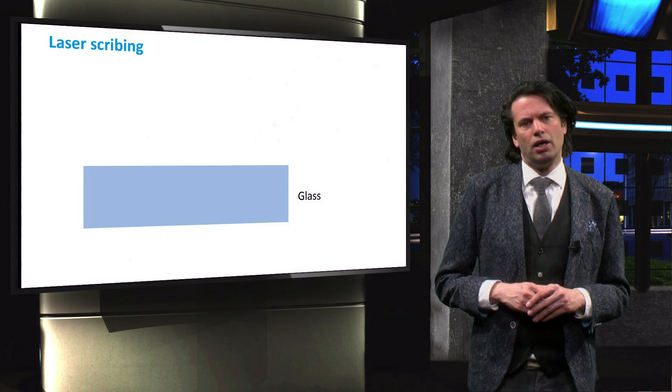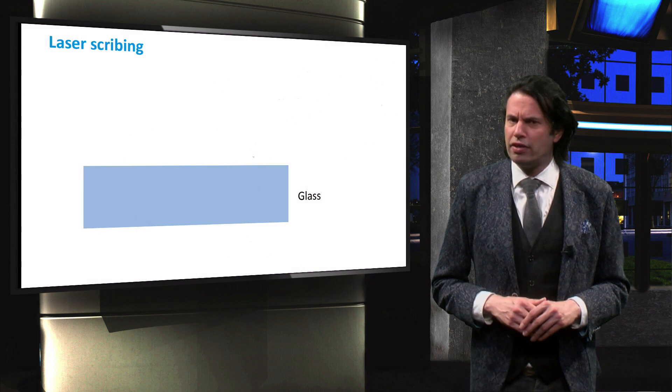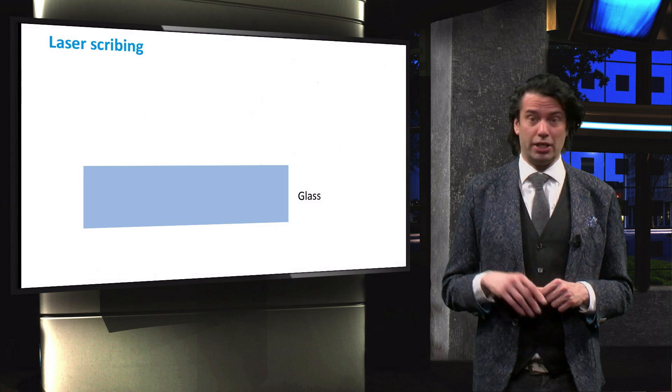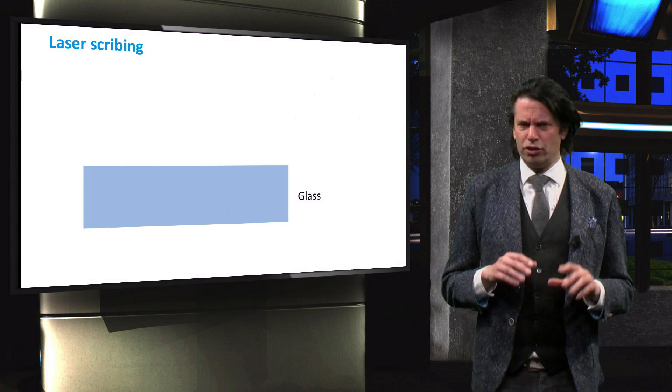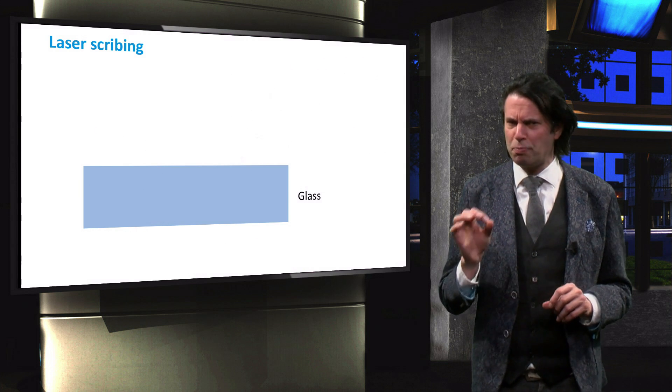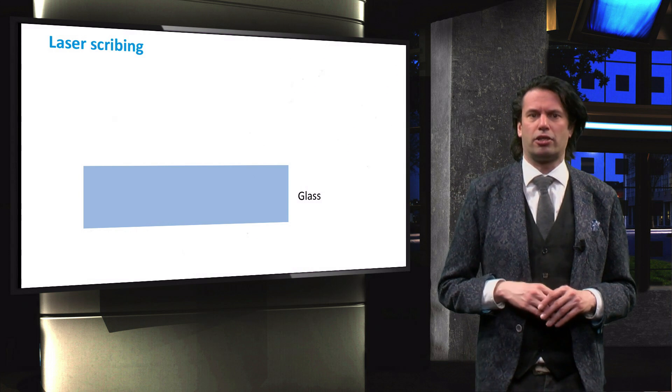On the very left and right of the module, metallic busbars are present to collect the current and conduct it to the bottom of the module, where they are connected with external cables. The series connection of the thin film modules is established with laser scribing. In general, a total of 3 laser scribes are required to separate 2 cells from each other.